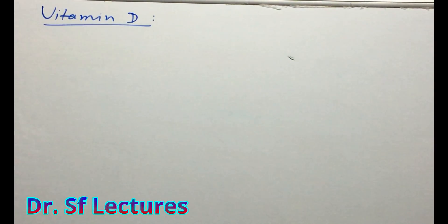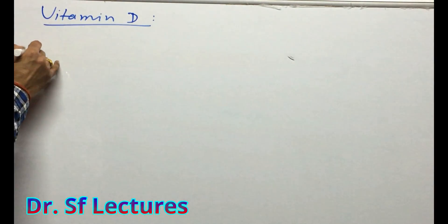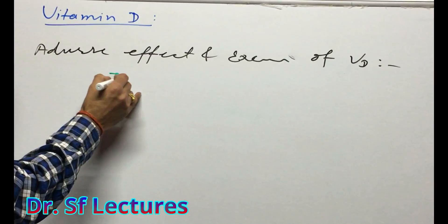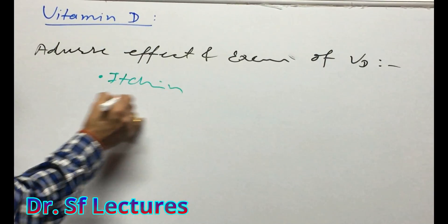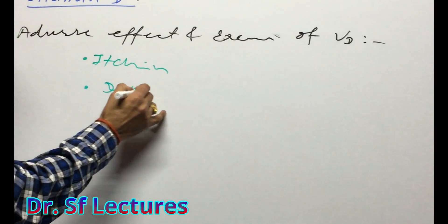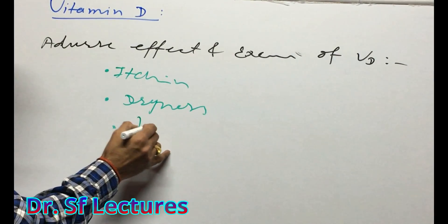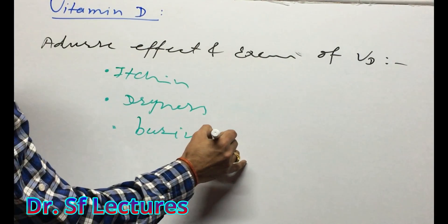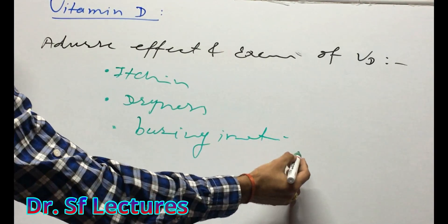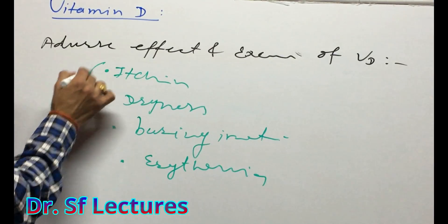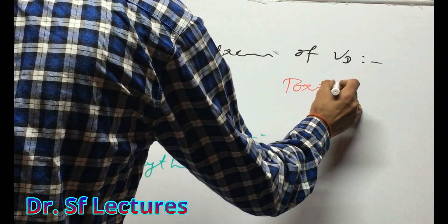Now we are going to talk about the adverse effects and excessive use of Vitamin D. The adverse effects include itching, dryness, burning, irritation, and arrhythmia.